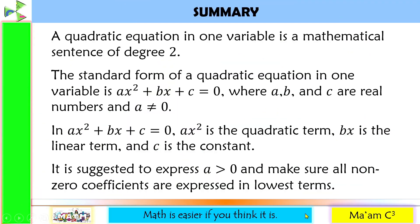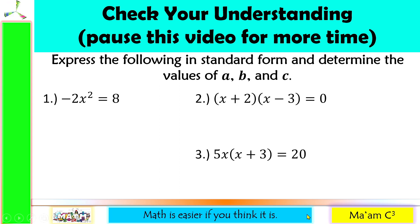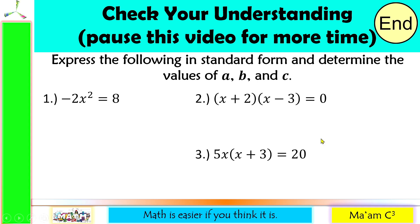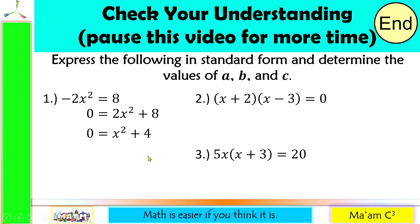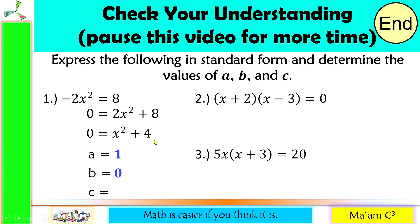For the summary, here are the things that we discussed in this video. Take time to understand this. Now it is time to check your understanding — pause this video for more time. Let us answer. For number 1, move negative 2x squared to the other side so the leading term is positive, then divide everything by 2: 2x squared divided by 2 is x squared, and 8 divided by 2 is 4. So a is the invisible 1, b is 0, and c is 4.